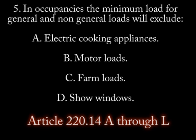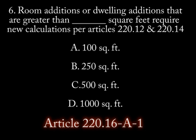Question 5: In occupancies, the minimum load for general and non-general loads will exclude: a) electric cooking appliances, b) motor loads, c) farm loads, d) show windows. Question 6: Room additions or dwelling additions greater than what square feet require new calculations as per Articles 220.12 and 220.14? Room additions in excess of: a) 100 square feet, b) 250 square feet, c) 500 square feet, d) 1,000 square feet.